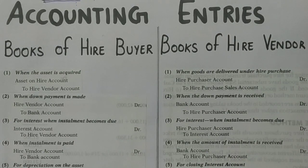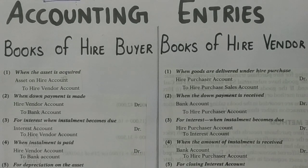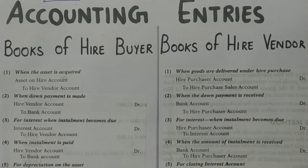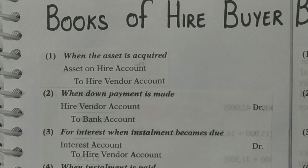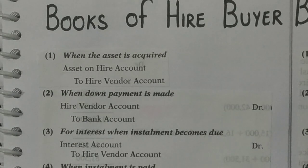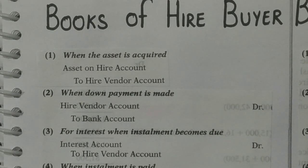In this video we will talk about accounting entries of the hire purchase system. First I will tell you how to pass the journal entries for the hire purchase system, and then I will show you how to prepare the accounts in the books of the hire vendor and in the books of the hire buyer. So first of all, journal entries in the books of the hire buyer — suppose I am talking about a transaction of acquiring an asset.